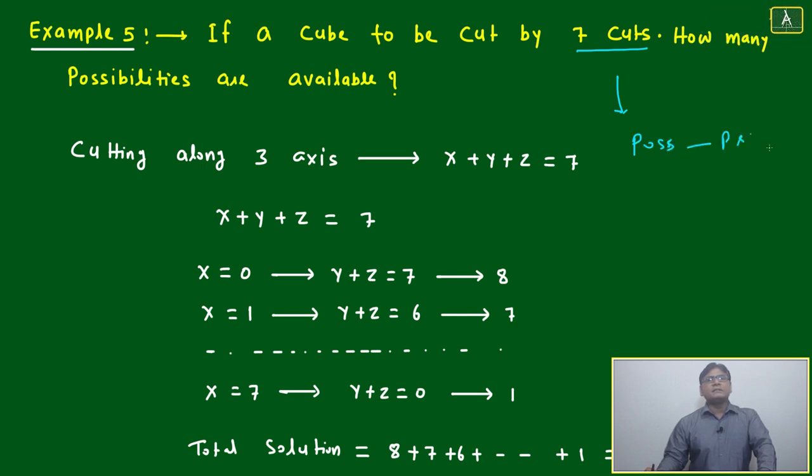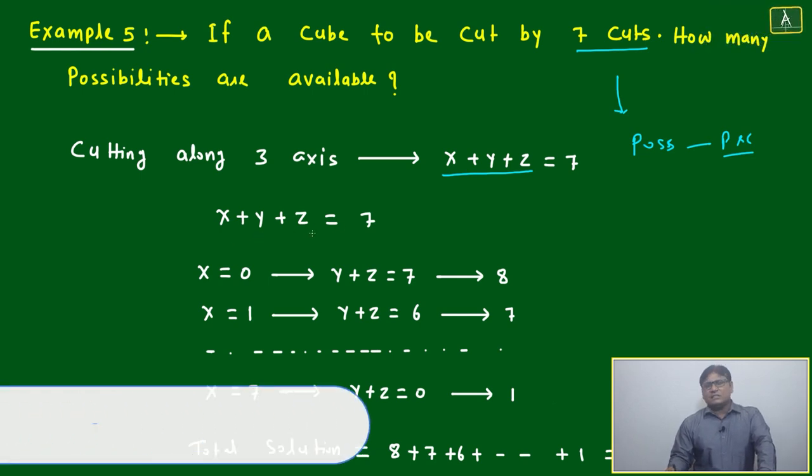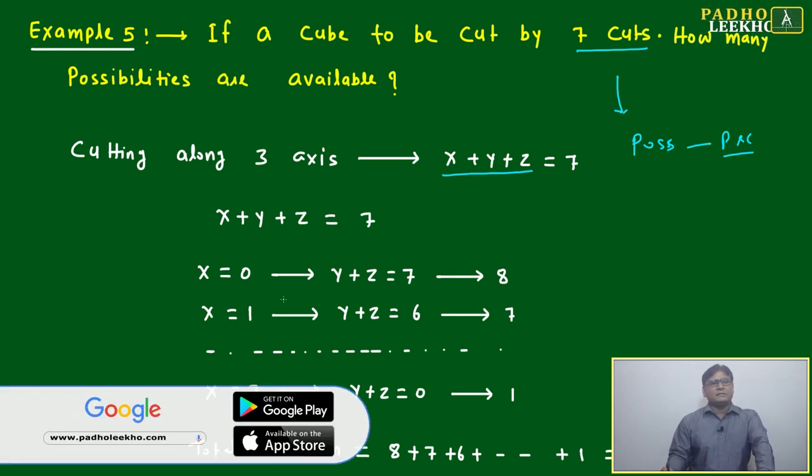Cutting along three axes, suppose x, y, z axes are there, equal to 7. Then a simple linear equation: x plus y plus z equal to 7. We can take x equal to 0, then y plus z must equal 7.